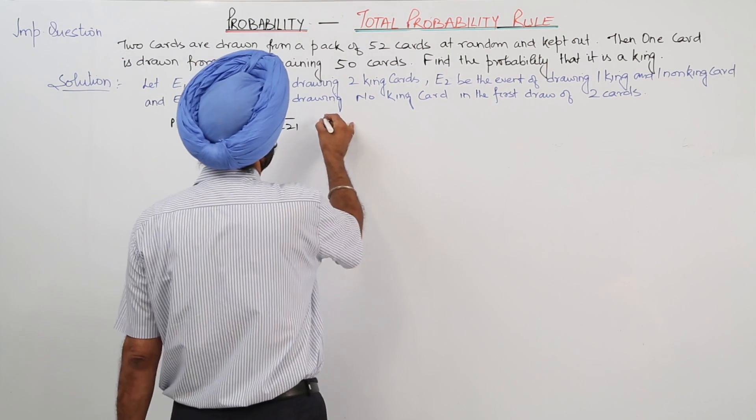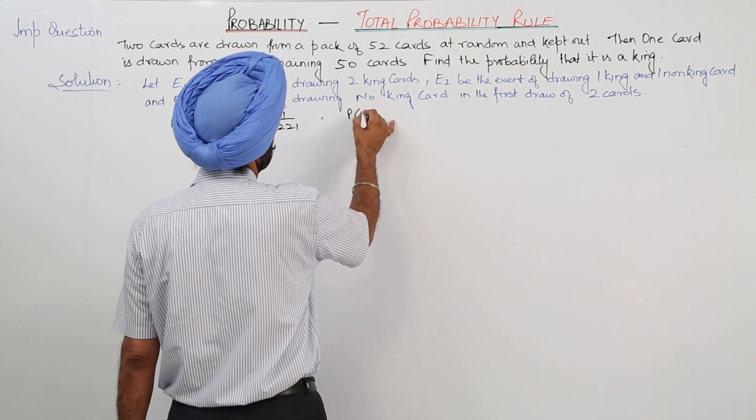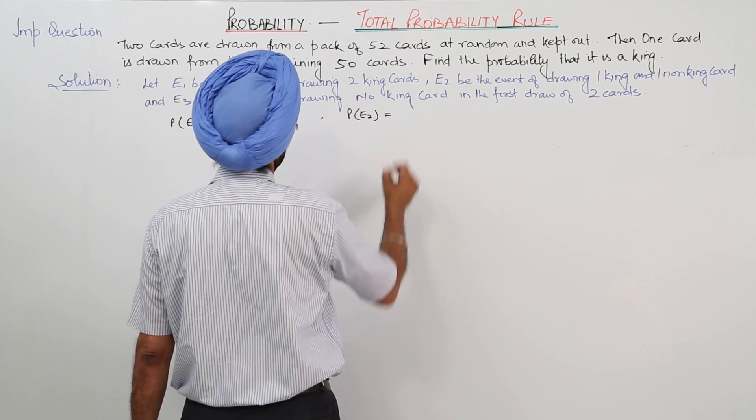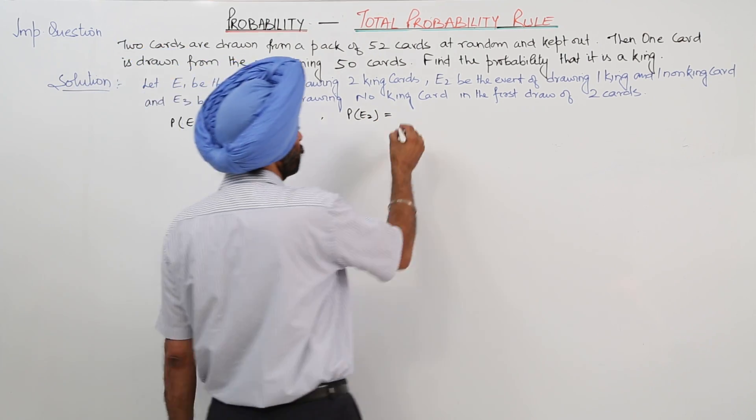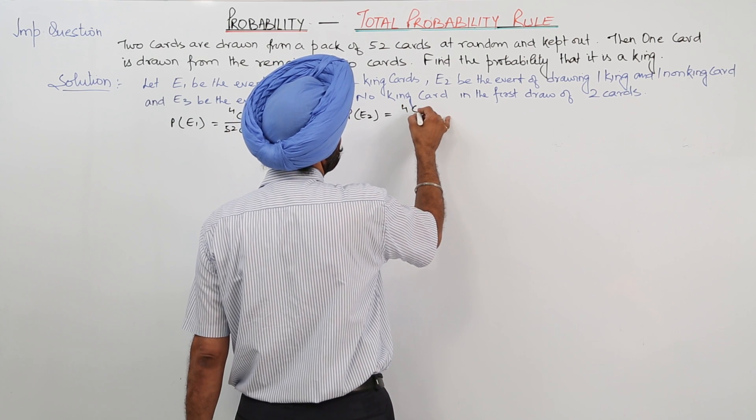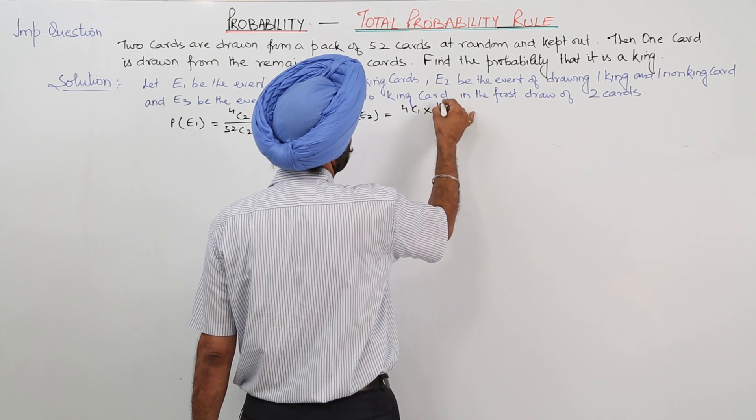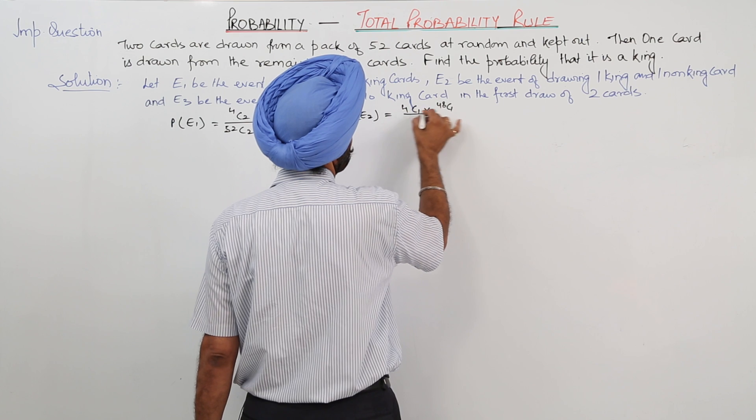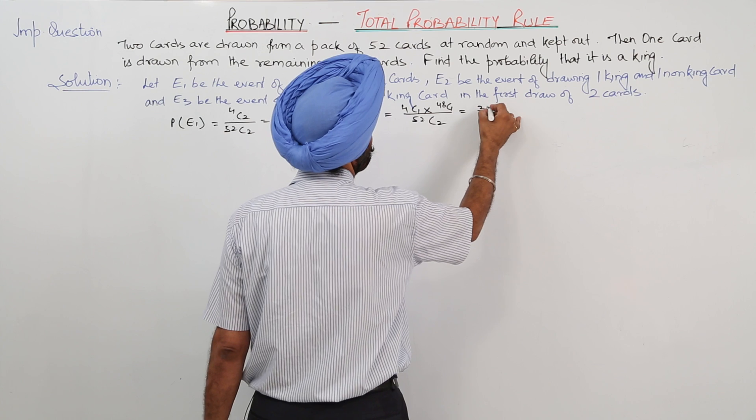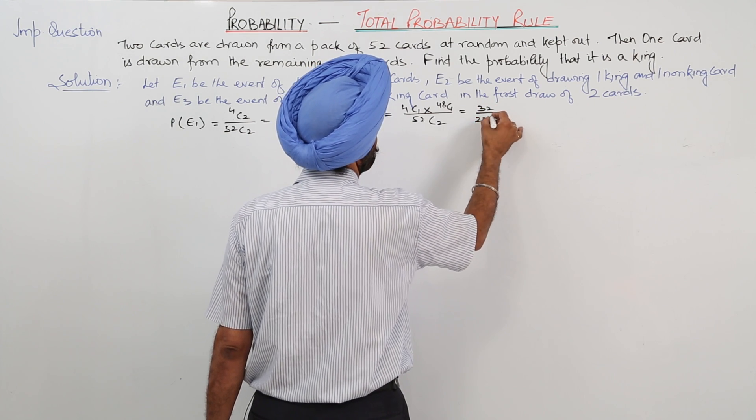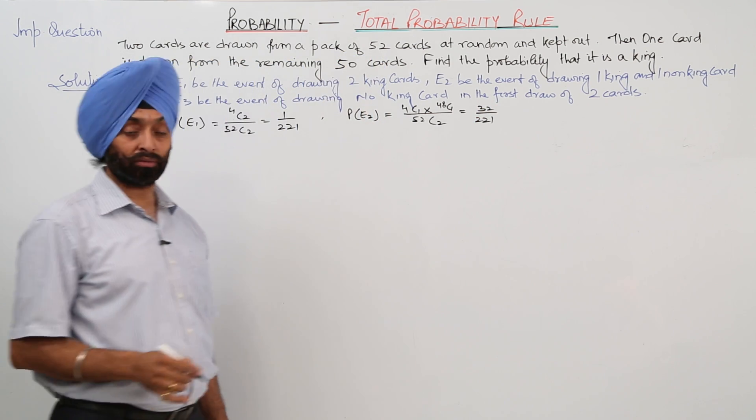Then probability for E2. Now it is 1 is king and 1 is not a king. So 4C1 times 48C1 upon 52C2. So this will be on solving 32 upon 221.